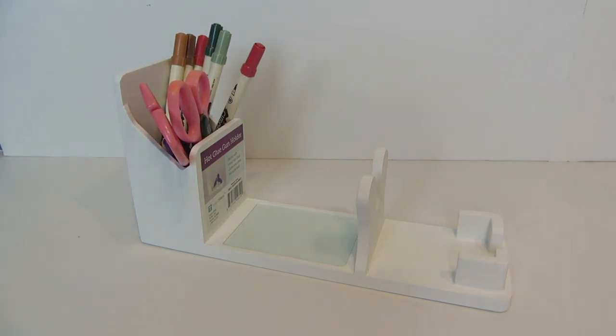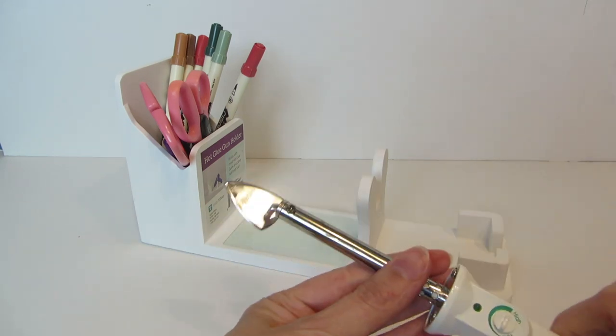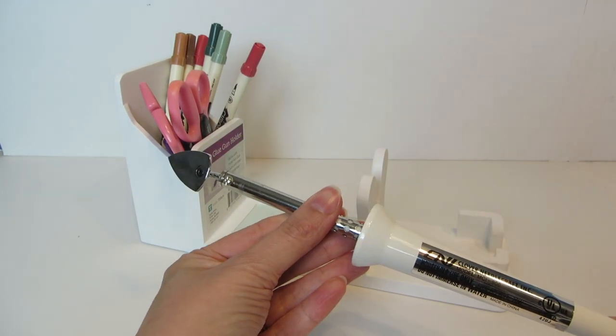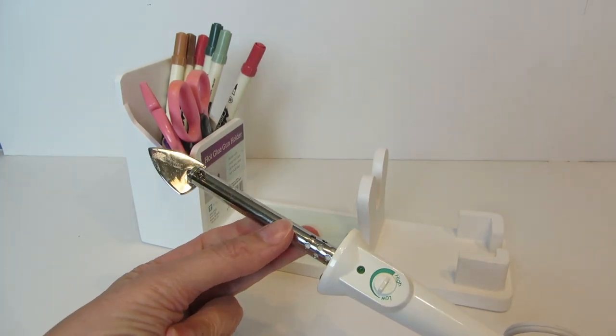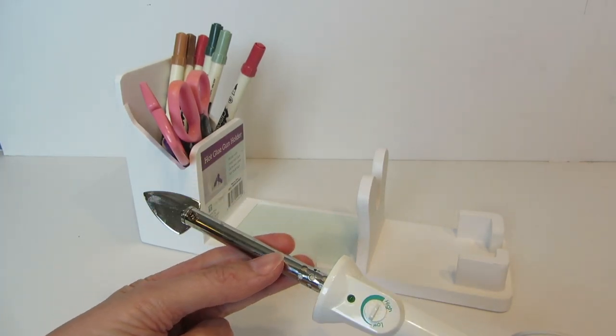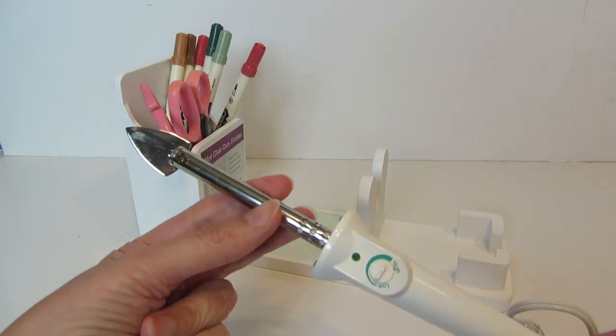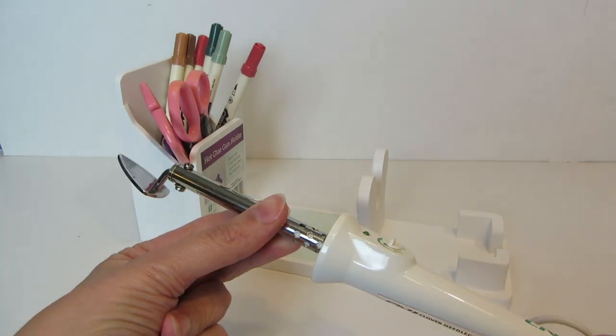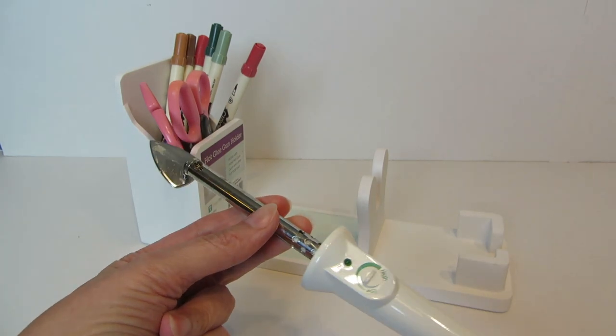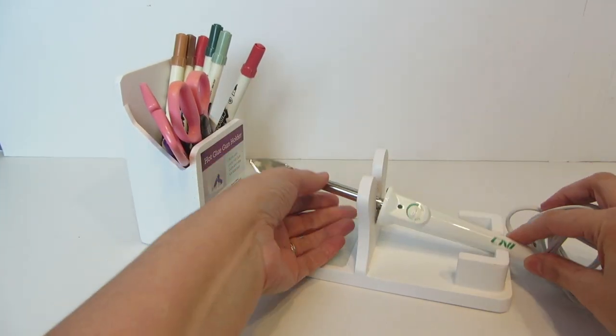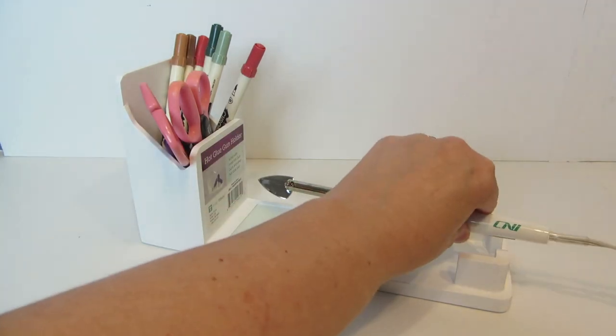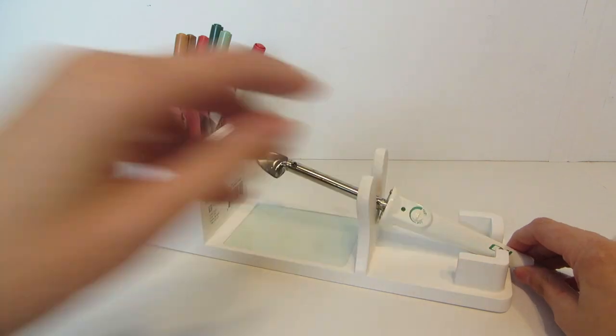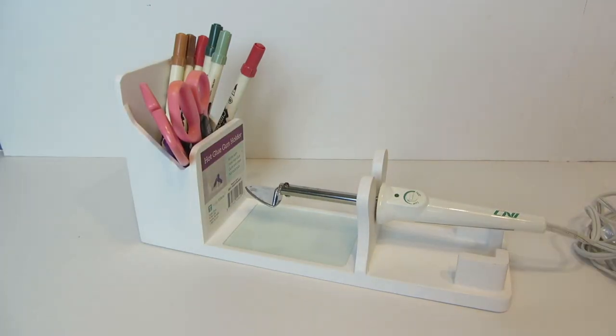And then I also have one other hot tool, and that is a little mini iron. I know a lot of quilters use these, but I actually use it in my mixed media to melt encaustic wax, crayons, different types of wax and things like that. So I thought that would be really nice as well to hold onto that little mini quilt iron there. That's perfect.